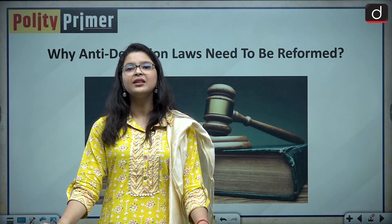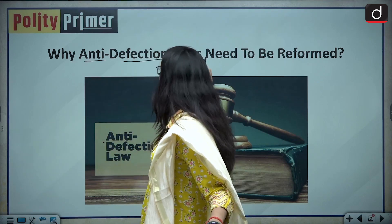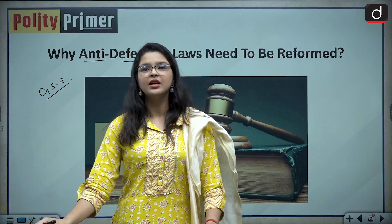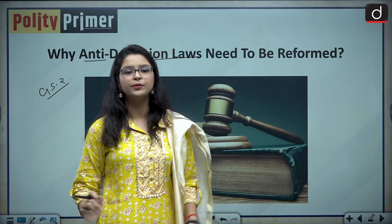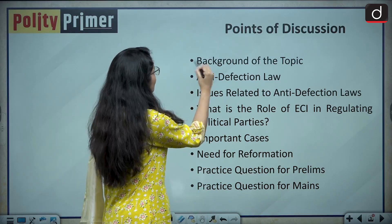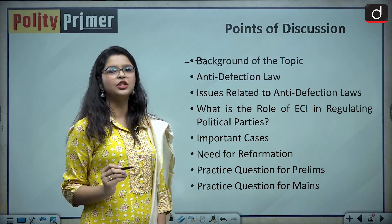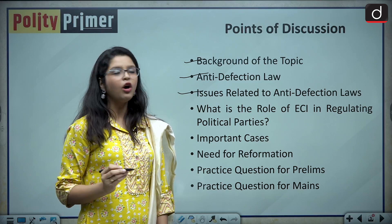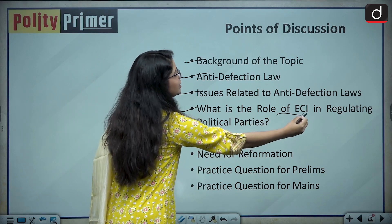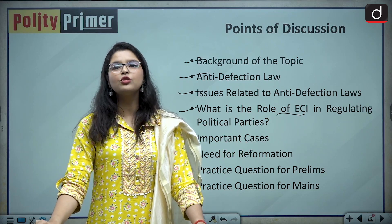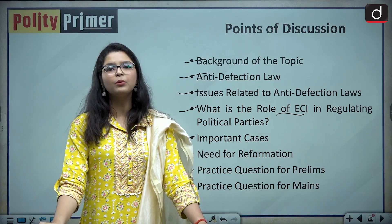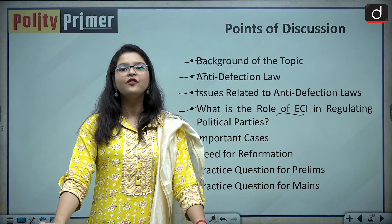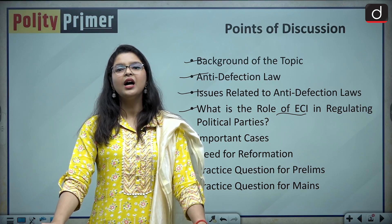Today's topic is: why anti-defection laws need to be reformed. This topic is important from your GS2 perspective. We will first see the background and context of the topic, then what is anti-defection law, the issues present in the law, the role of the Election Commission of India in regulating political parties, important cases and the opinion of the Supreme Court, why reform is needed, and finally practice questions for your prelims and mains examinations.